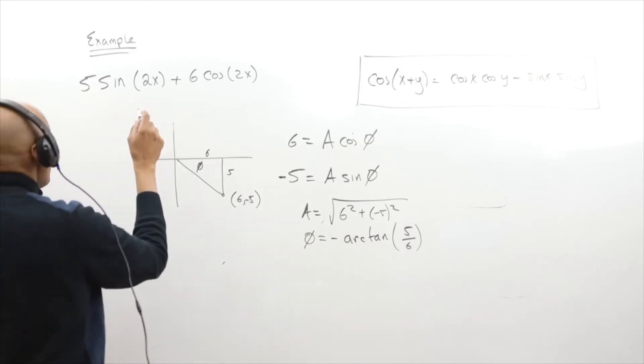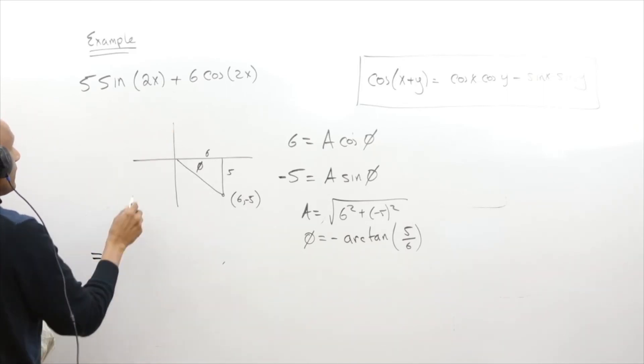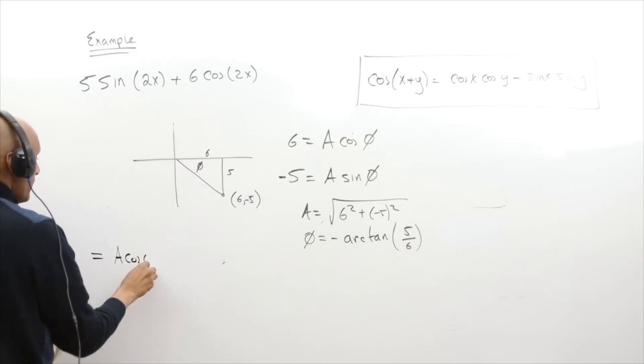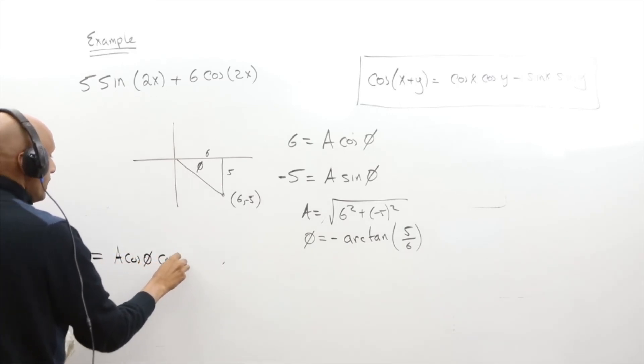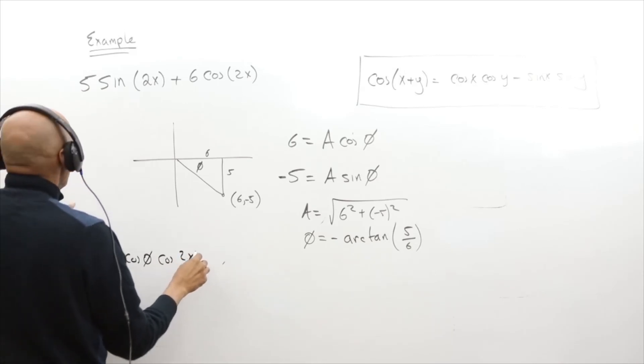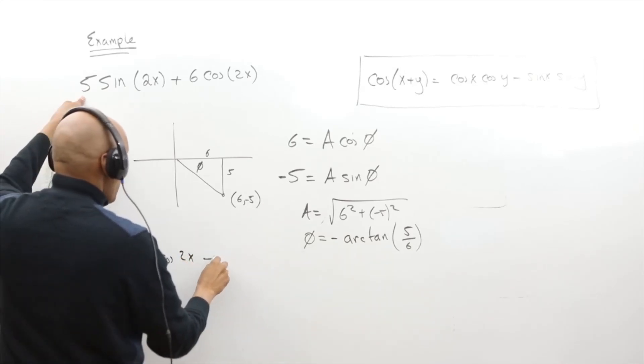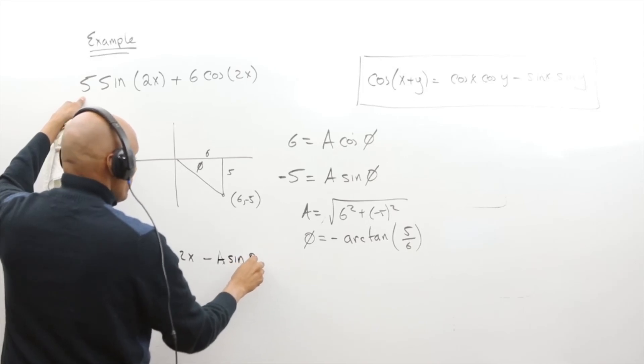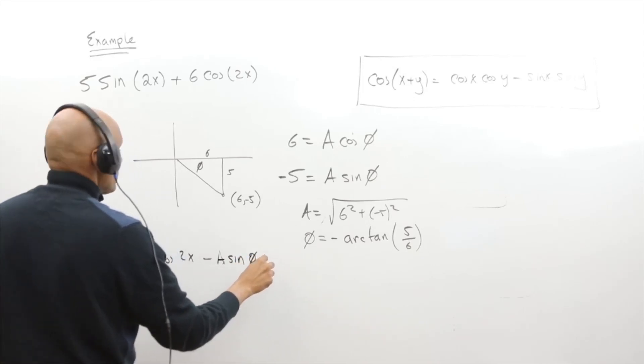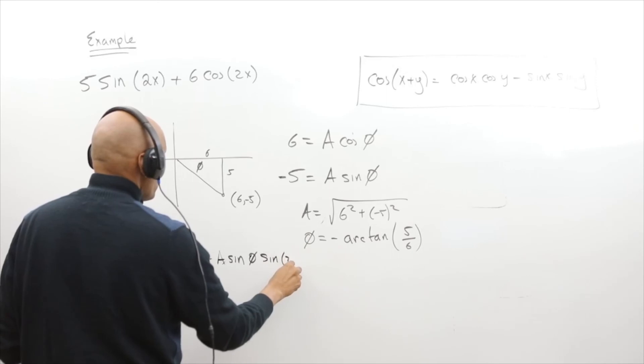So if you plug this back in over here, we'll see that this is really, I'll put the 6 first, so this will be A cosine of phi cosine of 2x, and then the 5 is minus A sine of phi times sine of 2x.